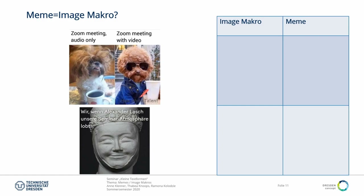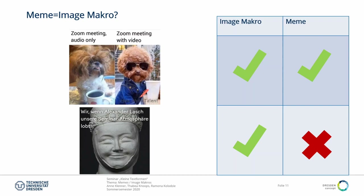Was heißt das nun praktisch? Ein Beispiel: oben ein weit verbreitetes Meme aus der Corona-Zeit, unten das Image Makro von der Anfangssequenz. Das Zoom-Meme ist ein Image Makro, das viel verbreitet und sehr präsent im Internet war – und ist damit ein Meme. Das Bild von der Anfangssequenz besteht aus Bild und Text, ist also ein Image Makro. Ob es ein Meme ist, kann man zum jetzigen Zeitpunkt noch nicht sagen, denn es ist noch ganz neu. Die Wahrscheinlichkeit, dass das zum neuen Internet-Hit wird, ist eher gering – also würde man das nach Schiffmans Definition nicht als Meme bezeichnen.